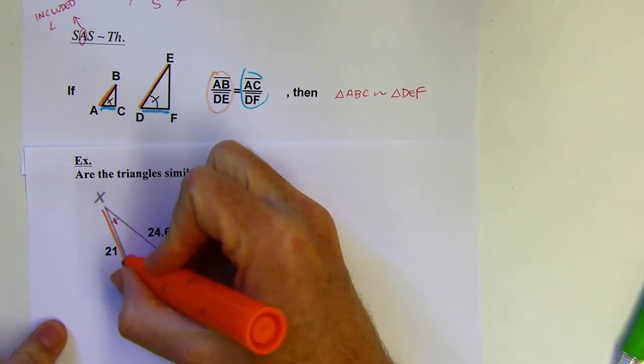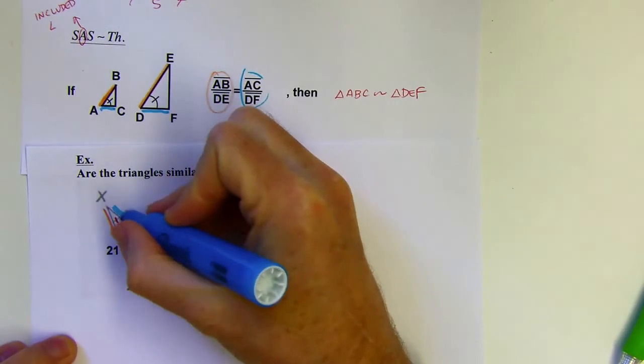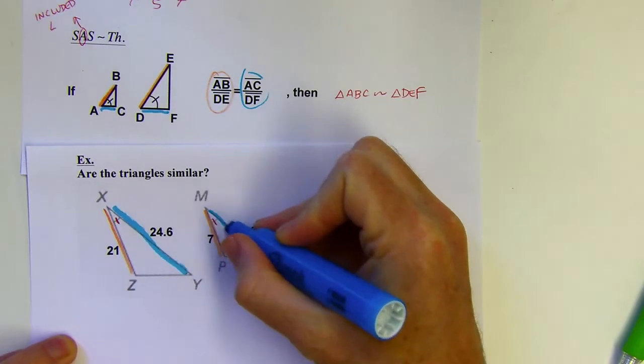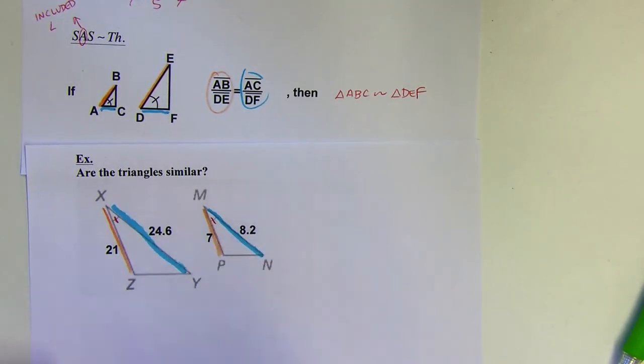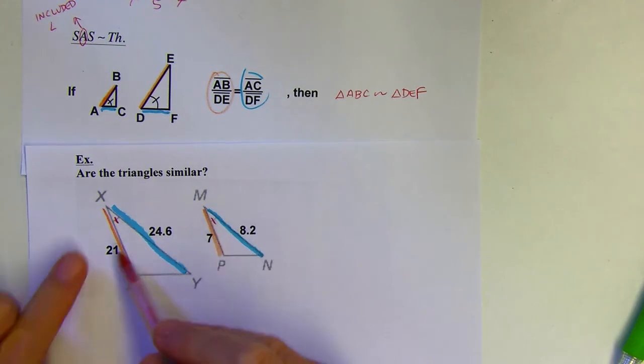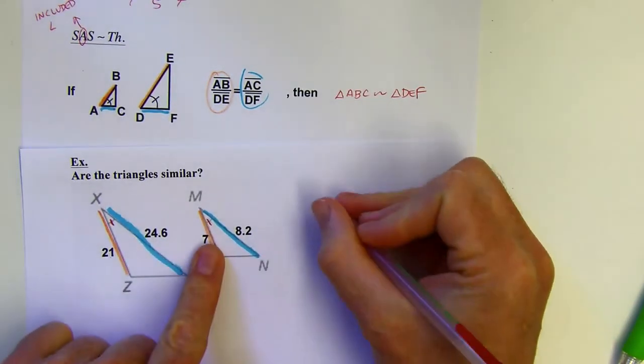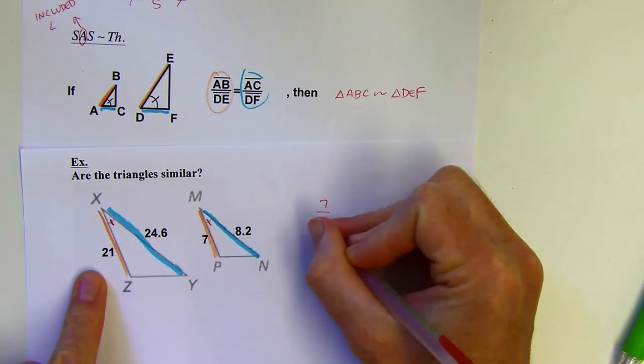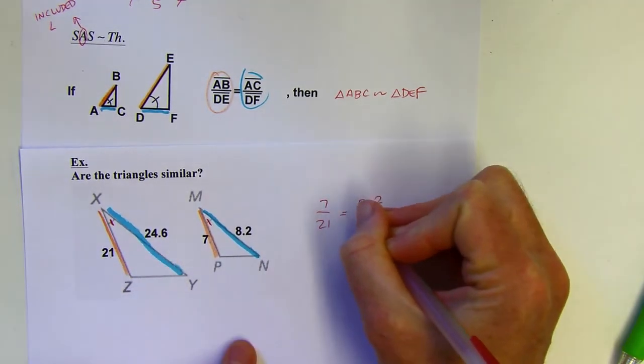So I need to see, check if 21 is to 7 as 24.6 is to 8.2. I know 21 is three times as big as 7. But in my head, I'm not sure if 24.6 is three times as big as 8.2. So let's try it out. And, you know, it doesn't really matter. You can go from small to big or big to small. I'm going to see if 7 is to 21 as 8.2 is to 24.6.